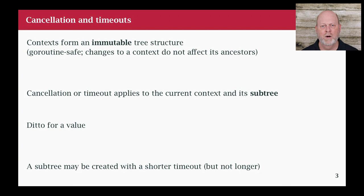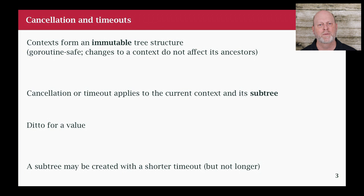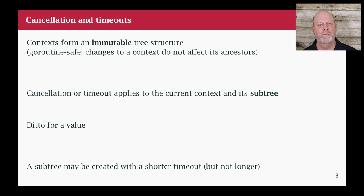Context is a little hard to understand because of one particular property: the context is not one thing, it's actually a tree. It has some root context that has no information, and as we add things to it - if we add a cancellation property, a timeout, or cast the context to carry a value - we keep making more nodes in this tree. The individual nodes, once created, are immutable. You never modify an existing context. What you do is create a new context that points to the parents above it. It's very important that they be immutable because we pass context around in goroutines.